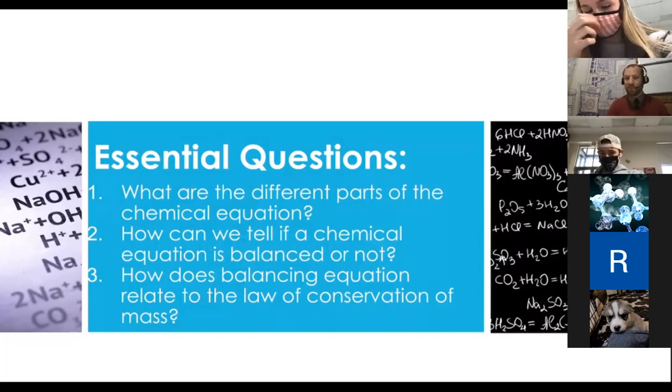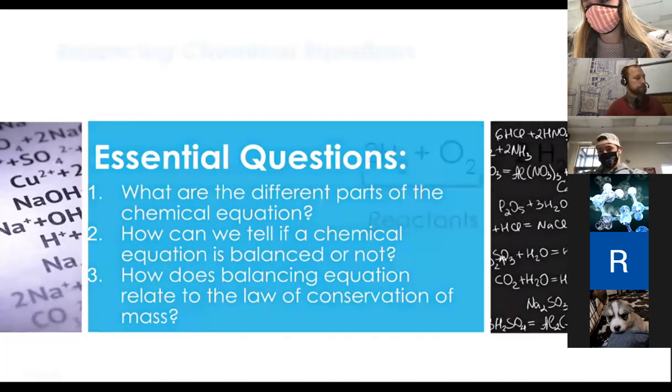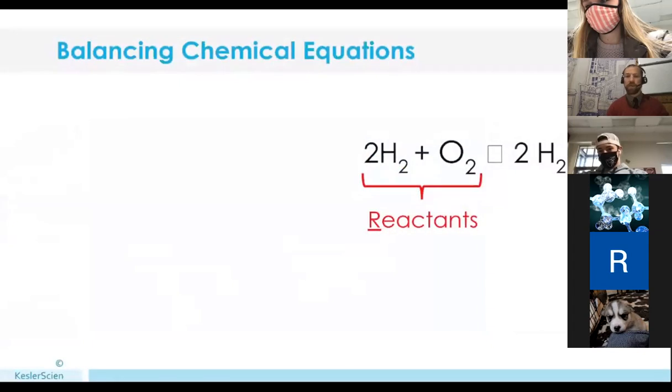We now know that mass can't change. We know that the number and type of atoms can't change. But how are we going to go about kind of rectifying that with actual real world examples of chemical reactions? Here's a couple of things that we're going to answer today. We talked about the different parts of the chemical equation last time. We're going to review that. How can we tell a chemical equation is balanced or not? And how do we balance equations and how does that relate to the conservation of mass?